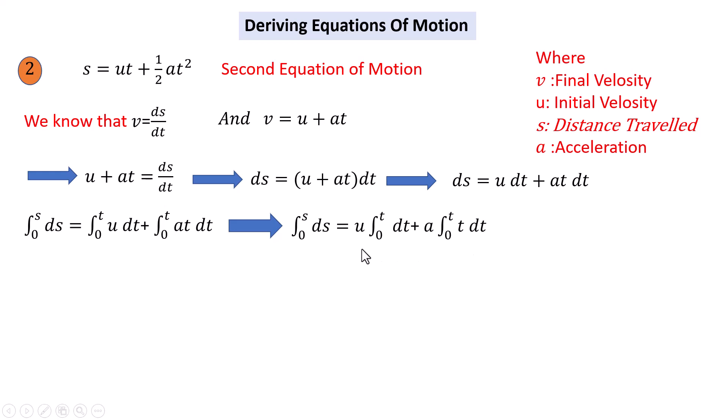By integrating this equation, we get s from 0 to s equals ut from 0 to t plus a times t squared over 2 from 0 to t.